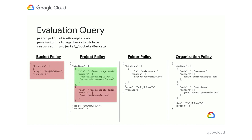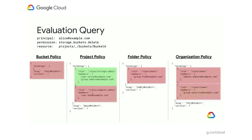Continuing, however, we encounter another binding. Alice is not listed in this binding, nor does the compute admin role contain the needed permission. At the folder level, we see that group foo is granted the owner role, but because Alice is not in that group, this binding also does not grant her access. This is similar when looking at the policy on the organization node — Alice is neither a member of the admins group nor the security group. All that said, the evaluation decision here is to allow her to delete the bucket. This is because all IAM bindings are additive. If any grant access, the action will be allowed.